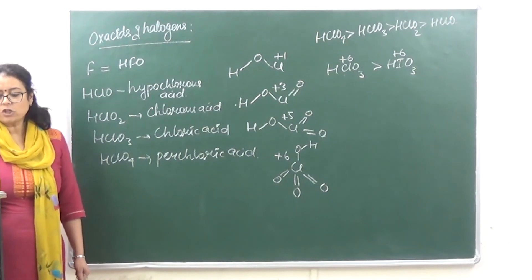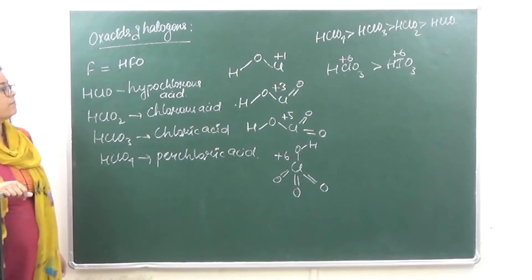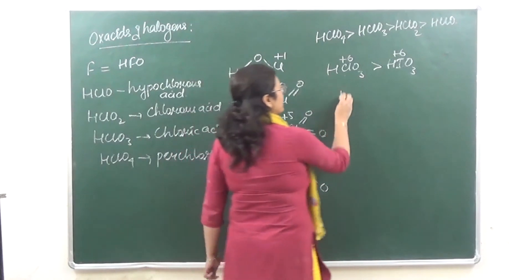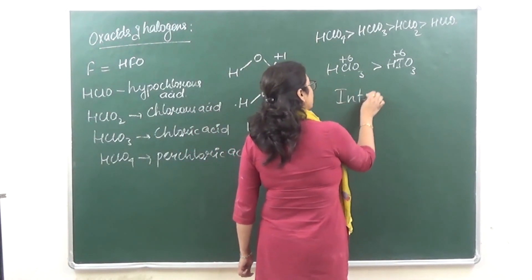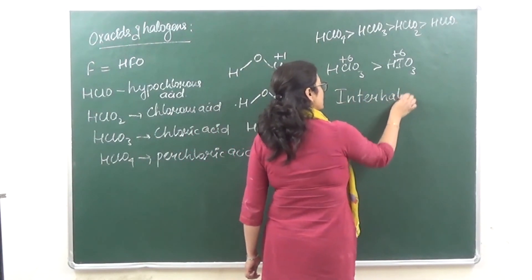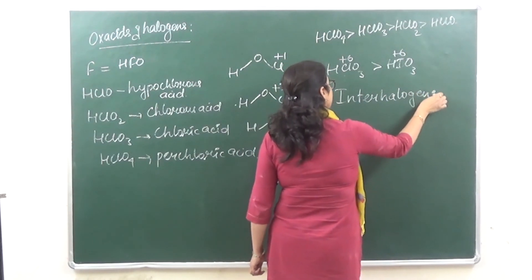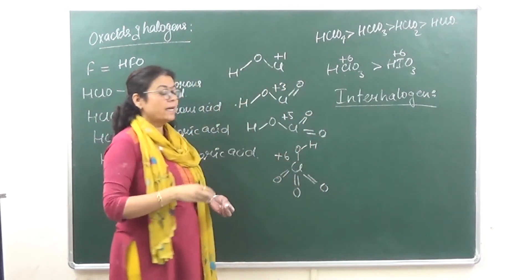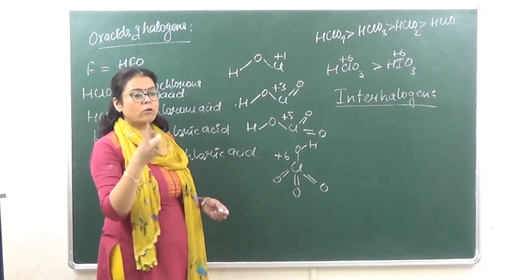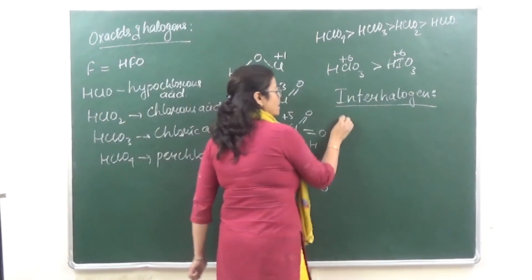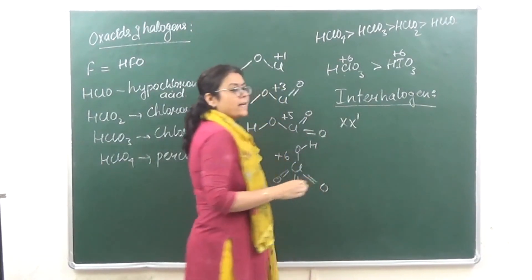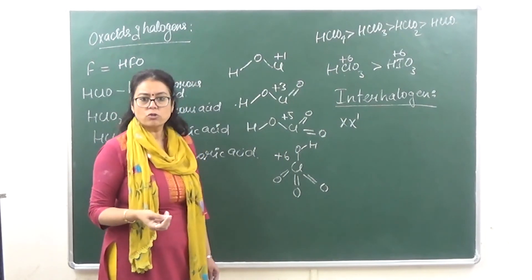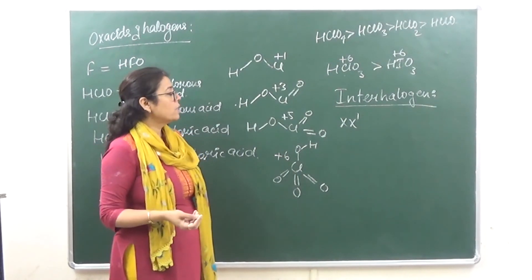With that, we finish Group 17. There is one small topic remaining: interhalogen compounds. Interhalogen compounds are compounds of two halogens, of the type XX′, where both X and X′ are halogens. The size of X′ is smaller than X.